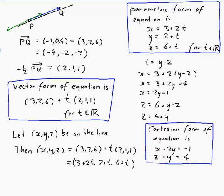You might worry that you could have come up with very different equations in all three forms. For example, in the Cartesian form, if I had used the z equation and gotten T = z - 6, I would have come up with completely different equations. But that's okay — there are many different pairs of equations that describe the same line. Any one pair that works is fine as your answer; there are multiple answers, but you only need to give one. So I have the vector form, the parametric form, and the Cartesian form — the question is answered.